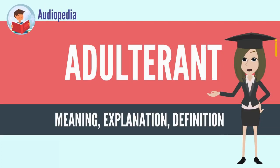Adulterant. An adulterant is a pejorative term for a substance found within other substances such as food, fuels or chemicals, even though it is not allowed for legal or other reasons. It will not normally be present in any specification or declared contents of the substance, and may not be legally allowed. The addition of adulterants is called adulteration.